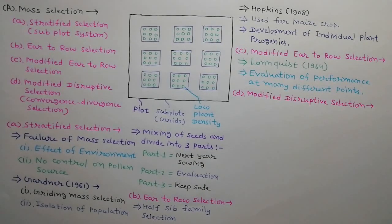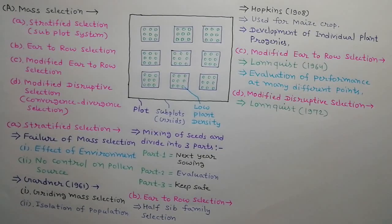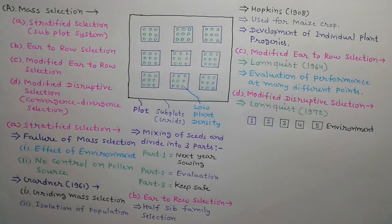Next is modified disruptive selection. This modification was developed by Lundquist in 1972. As shown in the diagram, take five parts of equal number of seeds from parent population and grow at five different places or environments. This is called divergence. Select superior plants at each place and their seeds are collected.